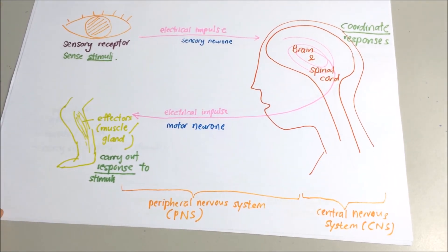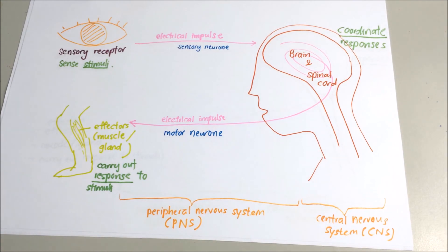So, remember, sensory neuron is from your sensory organ to the central nervous system. Motor neuron is from the central nervous system to the effectors. Okay, that's all for today's video. I'll be talking more about the motor neuron and sensory neuron in the next video.